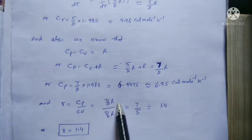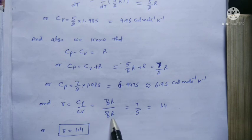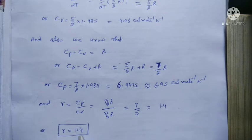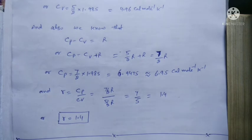And gamma, which is the ratio of the two principal specific heats, is Cp/Cv. Cp is (7/2)R and Cv is (5/2)R. R cancels out, 2 cancels out, giving 7/5, which equals 1.4. So gamma is 1.4.